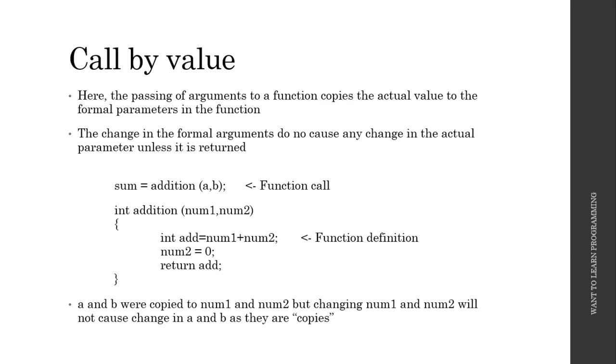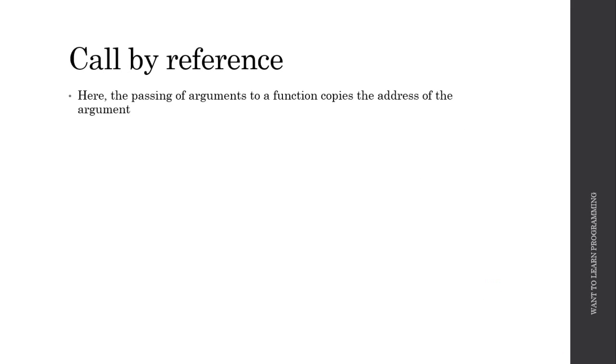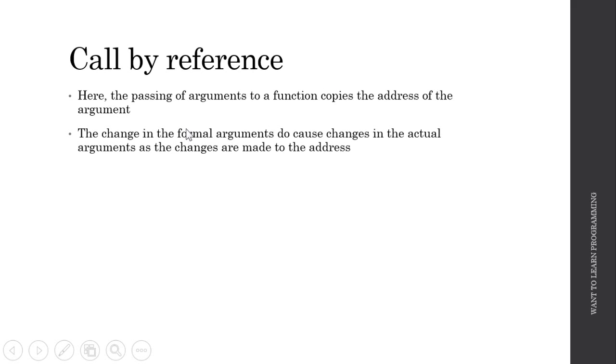Now let's see how call by reference works. Here the passing of arguments to a function does not copy the value of the arguments but it copies the address of the argument. The change in formal arguments do cause changes in the actual arguments because the changes are made not to the variable but to the address.